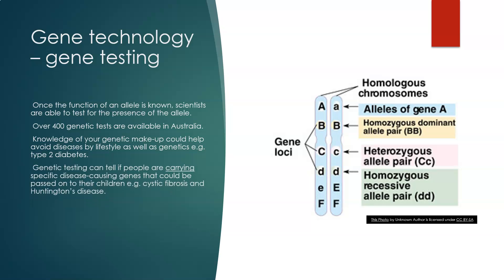Genetic testing can tell if people are carrying specific disease-causing genes that would be passed on to their children. For example, cystic fibrosis and Huntington's disease.